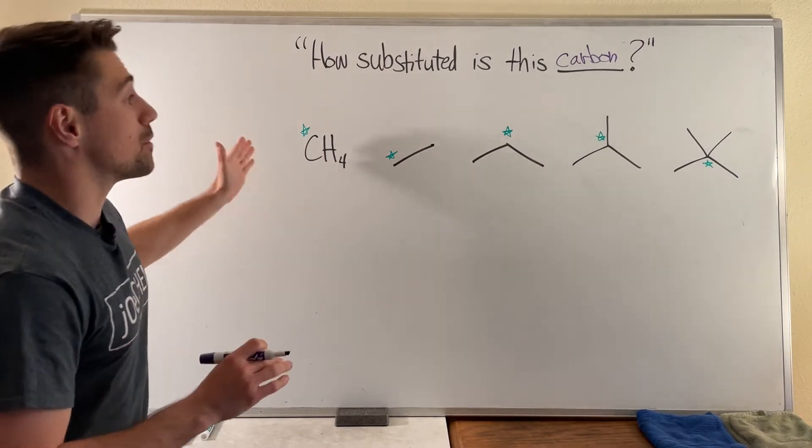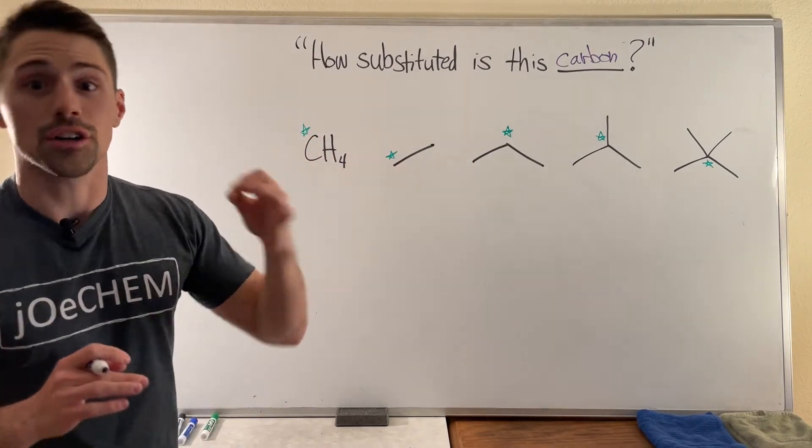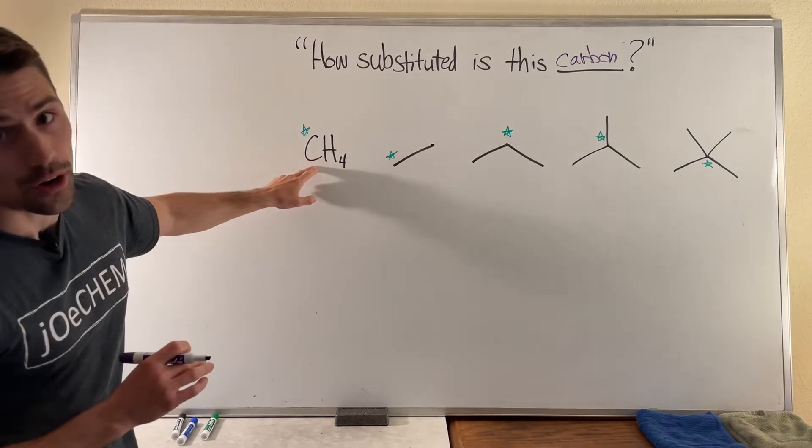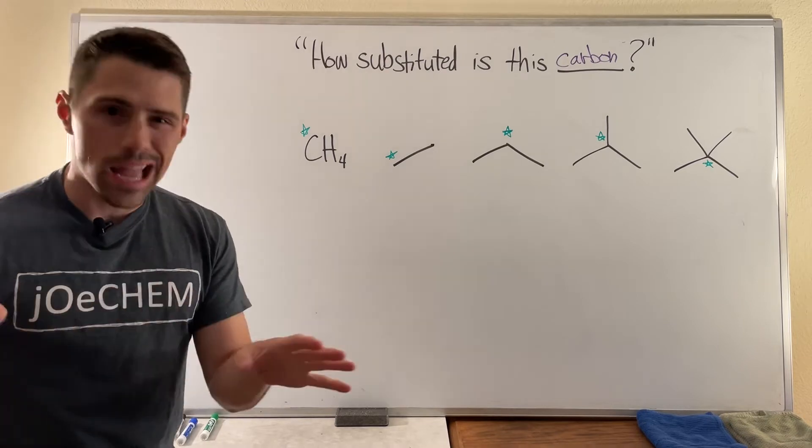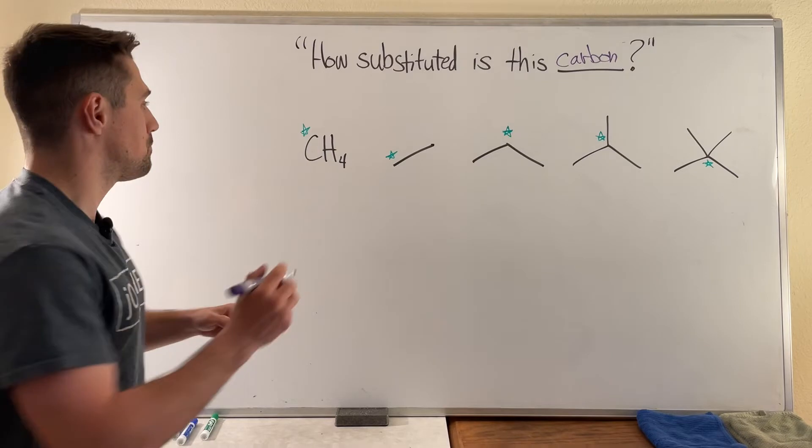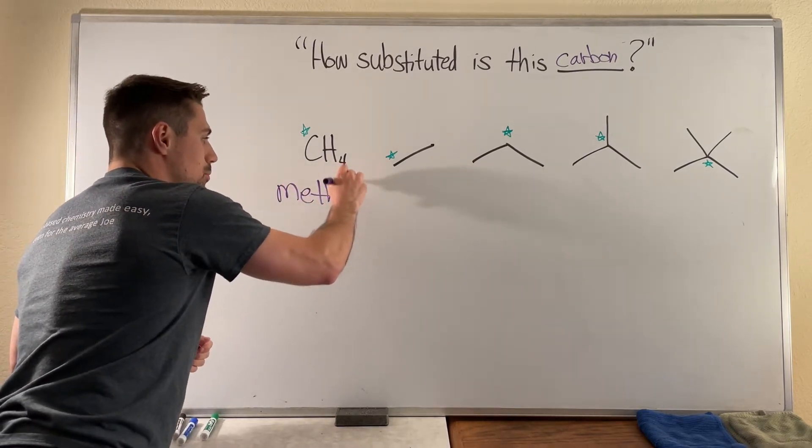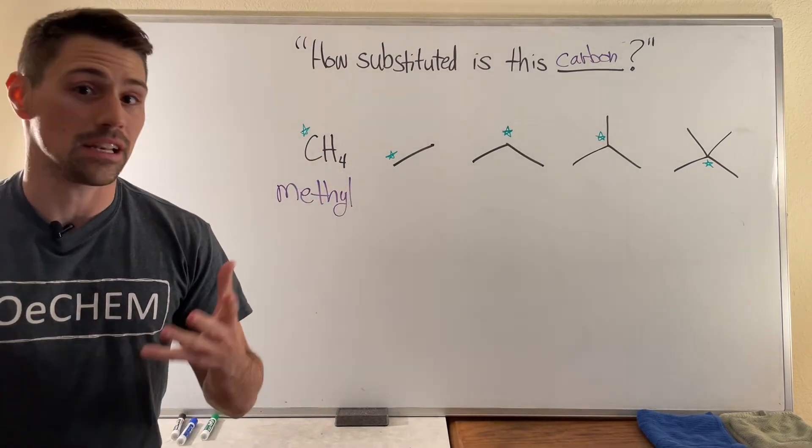Now what does this keyword substituted exactly mean when someone is usually asking you this in organic chemistry? For right now it means how many other carbons is the carbon that you're interested in attached to. So going from left to right over here, let's just look at each of these green starred carbons. So if I want to answer the question how substituted is this carbon? Well, it's only attached to four hydrogens, not any other carbons. So to answer that question of how substituted is the carbon, I would see that this is a methyl carbon. Methyl because it's all by its lonesome, it's not attached to any other carbons.